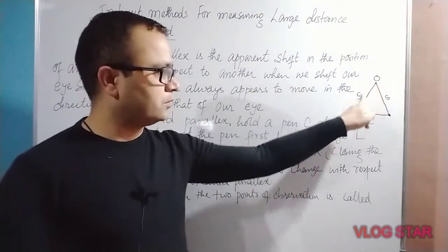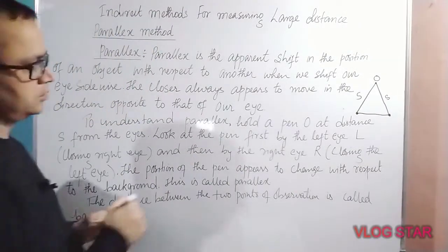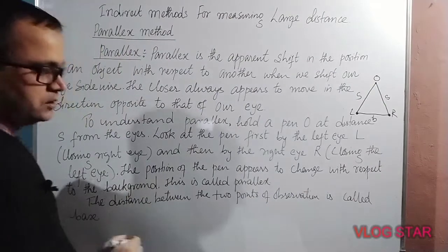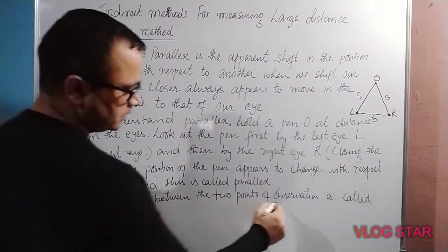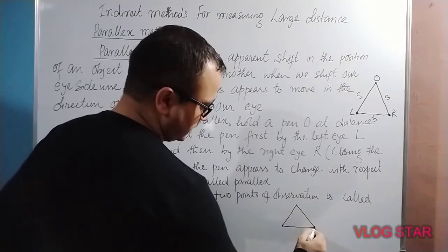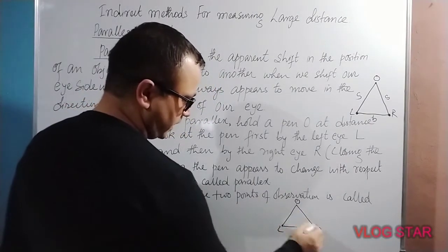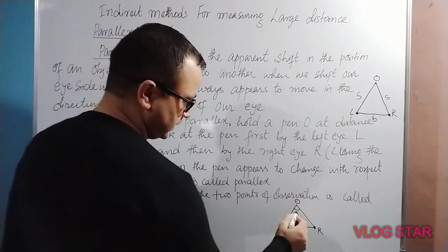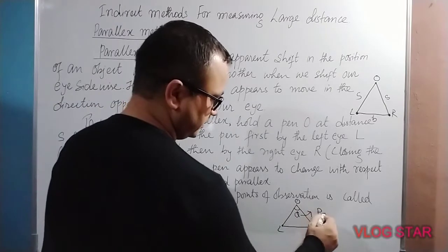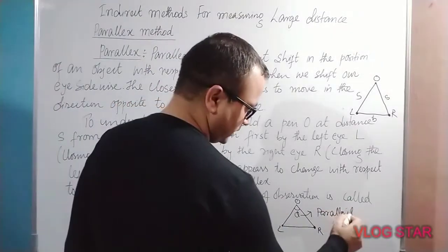The distance between the two points of observation is called the base. The left eye and right eye make an angle with the object called theta. This angle is known as the parallax angle.